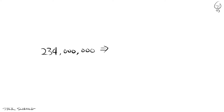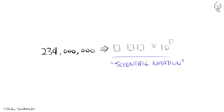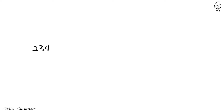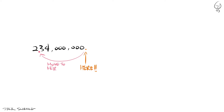We want this to look like a decimal multiplied by some exponent of 10. Just as before, it's just a matter of counting. We start with where the decimal point is located. For whole numbers, it's right after the final digit, right here.